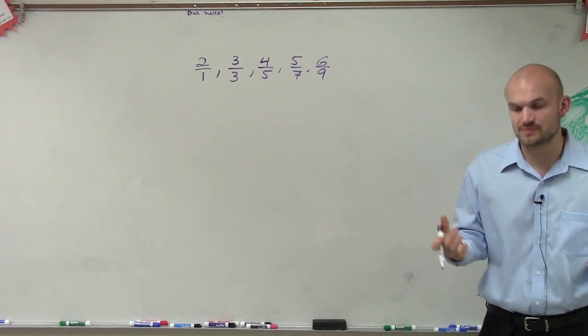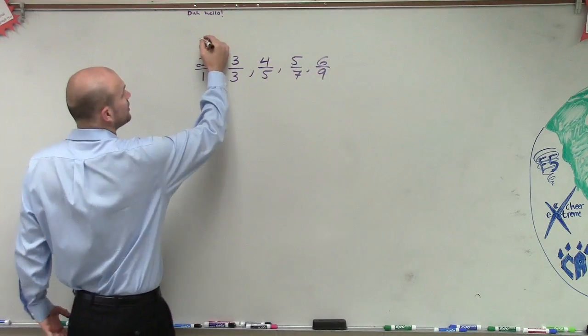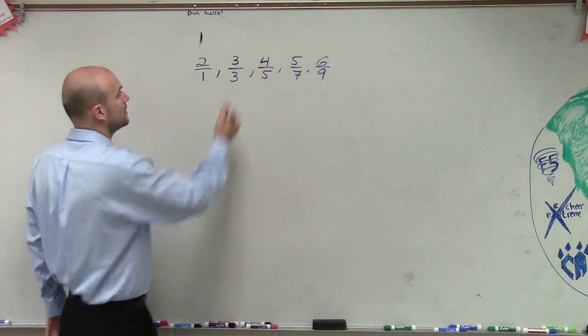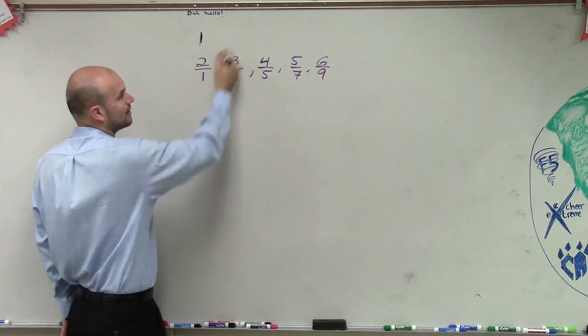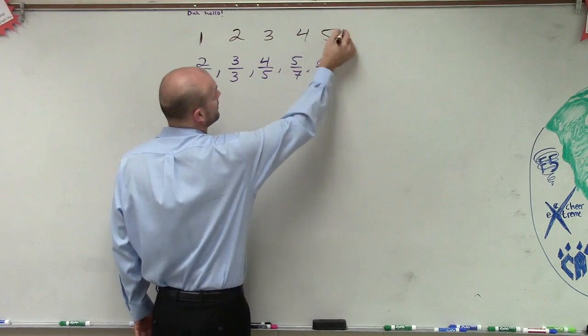So the first thing we need to do is look at each one of these terms, which we've talked about as far as finding the n value. We know that the first of that number is going to be 1, like our first term was 1. The value of it was 2 over 1. The second term was 2, 3, 4, and 5.